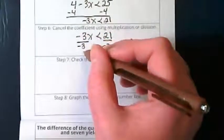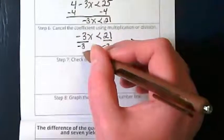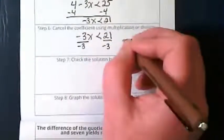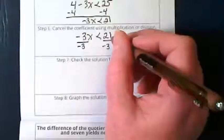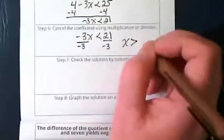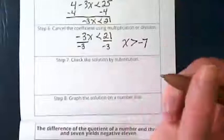Negative 3 divided by negative 3 gives us that positive invisible 1, leaving us with x. 21 divided by negative 3 gives us negative 7.